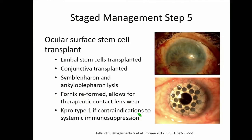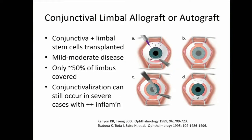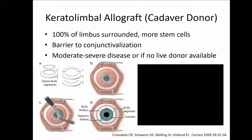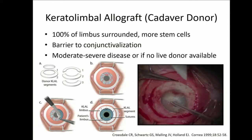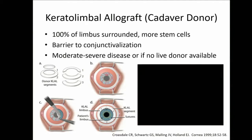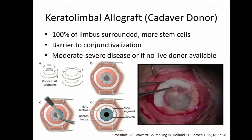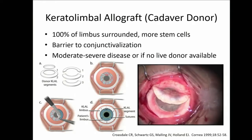Step five is ocular surface stem cell transplantation, where you can replace conjunctiva or replace the stem cells. At this point, when you're doing the 360-degree conjunctivoperitomy, you can release any symblephron or ankyloblephron. Fornix reformation is really important so they can wear their protective contact lens. Types of transplants include conjunctival limbal allografts or autografts for mild to moderate cases, and keratolimbal allograft using cadaver donor tissue for moderate to severe cases, providing 100% 360-degree limbus coverage as a barrier to conjunctivalization.